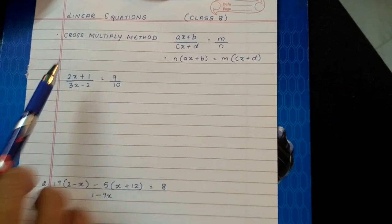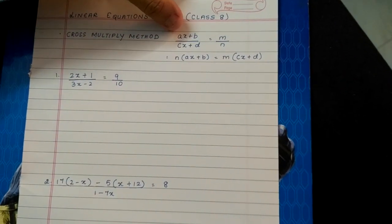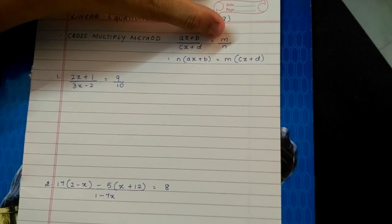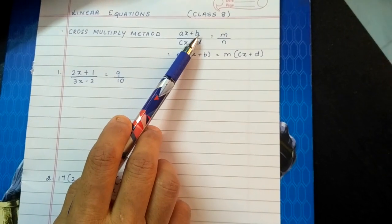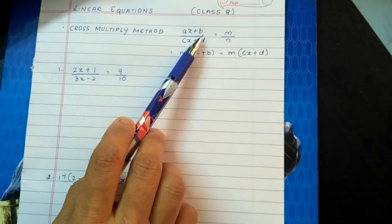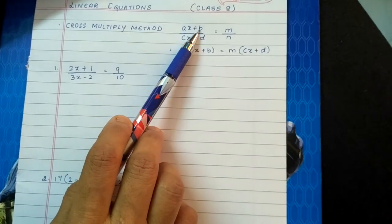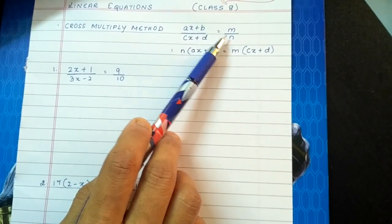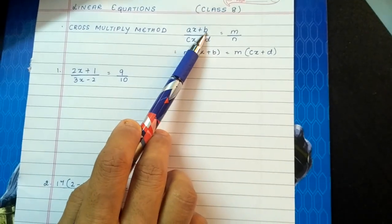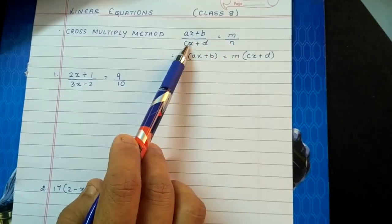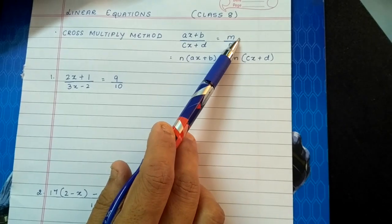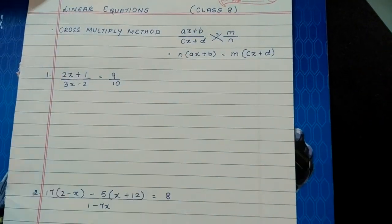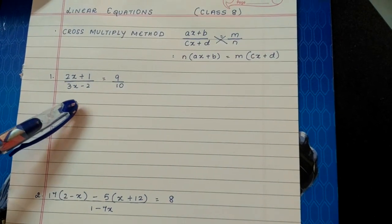Today we are going to learn the cross multiply method. Suppose ax plus b by cx plus d is equal to m by n. What we do is cross multiply. That means this numerator ax plus b has to be multiplied with the denominator of the right hand side, so n multiplied by whole of this numerator. Here also m has to be multiplied with the whole of this denominator. This is called cross multiply method. We are going to use this method to solve the equation.